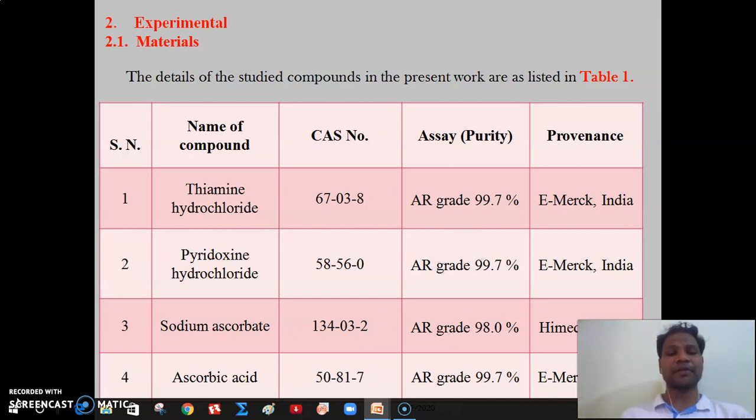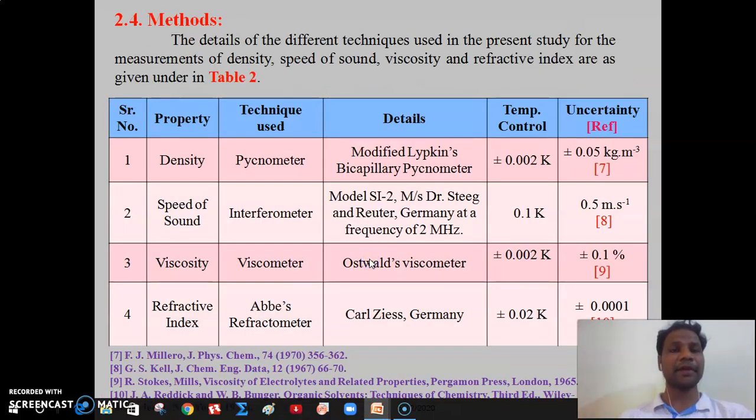For temperature control during measurements, we have used Julabo Cryostat and MK70 Ultra Cryostat. The density of studied binary systems were measured using Lipkin's bi-capillary pycnometers. These pycnometers were calibrated by measuring the densities of aqueous solutions of sodium chloride in the low concentration range. The density values agreed well with the literature up to 0.05 kg per meter cube.